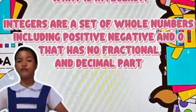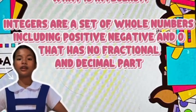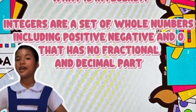Integers are a set of whole numbers including positive, negative, and zero that have no fractional or decimal parts.